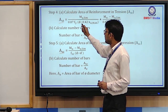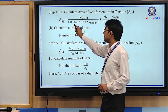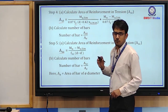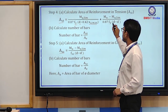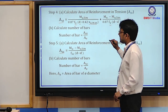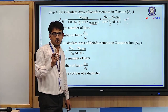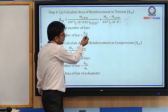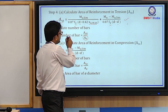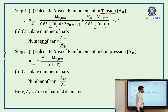The formula for Ast involves Mu,lim, 0.87 × fy, effective depth d, and xu,max. Similarly, the second part uses Mu, Mu,lim, fy, d, and d'. Once Ast is calculated, we choose a bar diameter, compute the area of one bar (A_φ = π/4 × φ²), divide Ast by A_φ, and get the number of bars to provide in the tension zone.